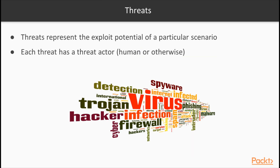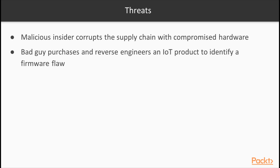Threats represent the exploit potential of a scenario and each threat has a threat actor. The threat actor could be a human — this could be a bad guy outsider or even an insider with intimate knowledge of the system being targeted. There are many threats to any particular system and IoT devices are no exception. There are threats such as a malicious insider that corrupts the supply chain with compromised hardware, or a bad guy that purchases and reverse engineers an IoT product to identify a firmware flaw. As IoT engineers design their solutions, it is important to perform comprehensive threat modeling to identify and determine mitigations for the unique threats faced by those solutions.